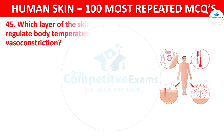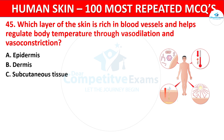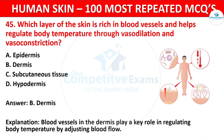Question 45. Which layer of the skin is rich in blood vessels and helps to regulate body temperature through vasodilation and vasoconstriction? Your options: Epidermis, Dermis, Subcutaneous tissue, or Hypodermis. The correct answer is Dermis. The blood vessels in the dermis play a key role in regulating body temperature by adjusting blood flow.